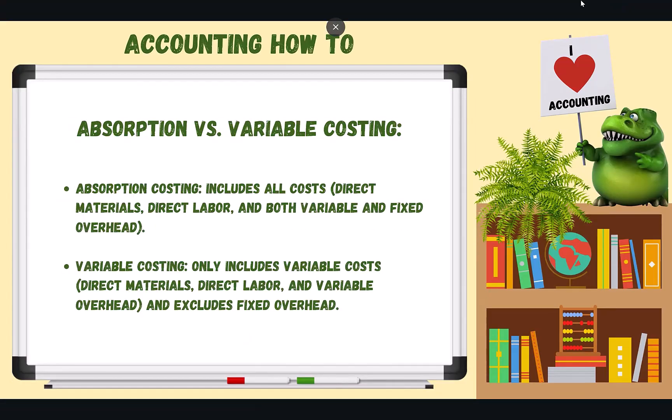When talking about the difference between absorption costing and variable costing: absorption costing includes all of the costs — direct materials, direct labor, and both variable and fixed overhead. So our parchment paper is a variable indirect material, and our rent is a fixed cost, but both are included. Absorption costing lumps together direct materials, direct labor, and all of the overhead.